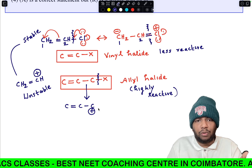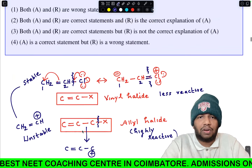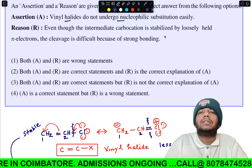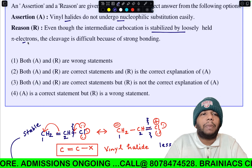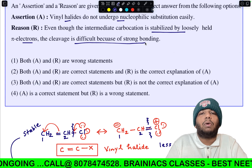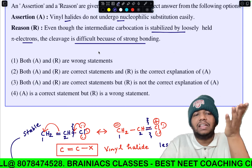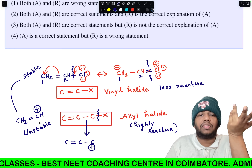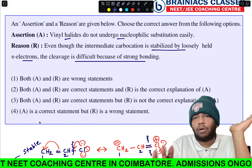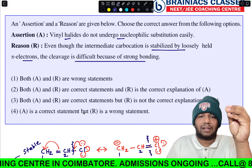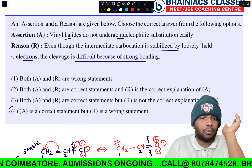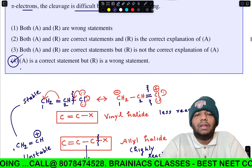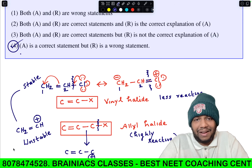In the case of allyl halide it is the opposite — breaking the C–X bond gives an allylic carbocation stabilized by resonance (positive charge conjugated with the double bond), so the allyl halide is highly reactive. The reason given in the question states that the intermediate carbocation is stabilized by loosely held pi electrons, which is incorrect — the vinyl carbocation is actually unstable. Therefore assertion is correct but the reason is a wrong statement, making option 4 the correct answer.